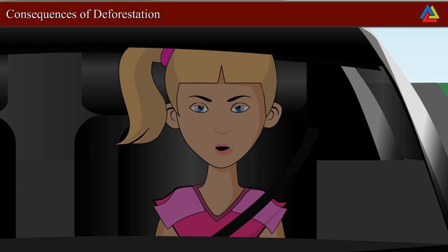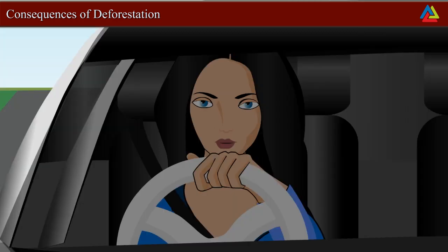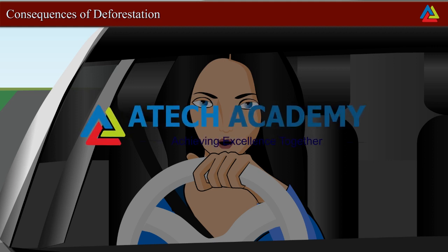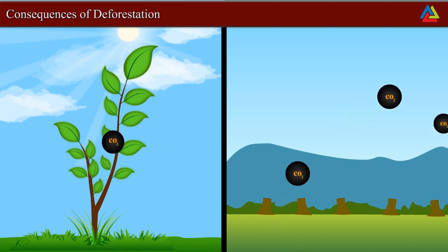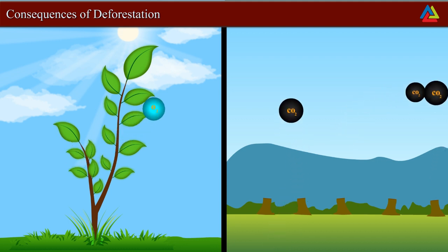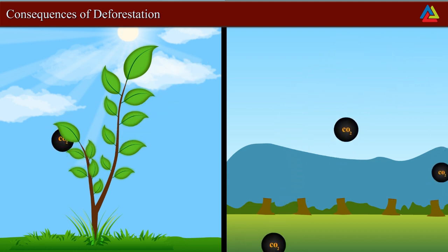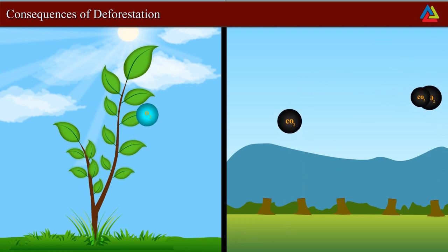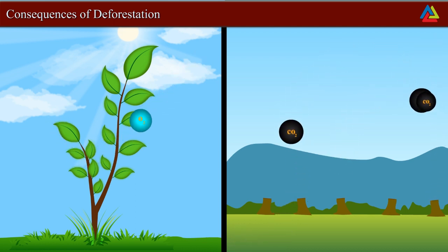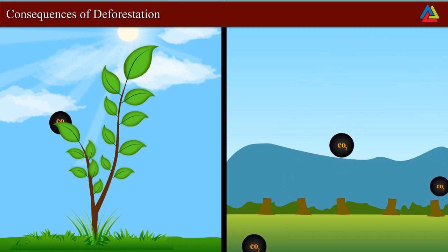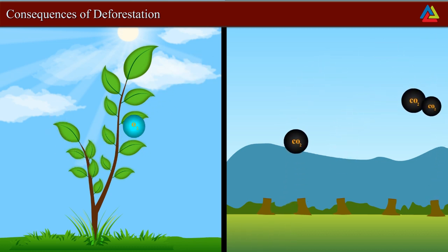A lot of dust is coming inside the car and I am feeling hot. Do you know that the increase in temperature and pollution level is caused due to deforestation? Yes, deforestation increases the level of carbon dioxide in the air. During photosynthesis, plants use carbon dioxide, so fewer trees means less carbon dioxide will be used up.